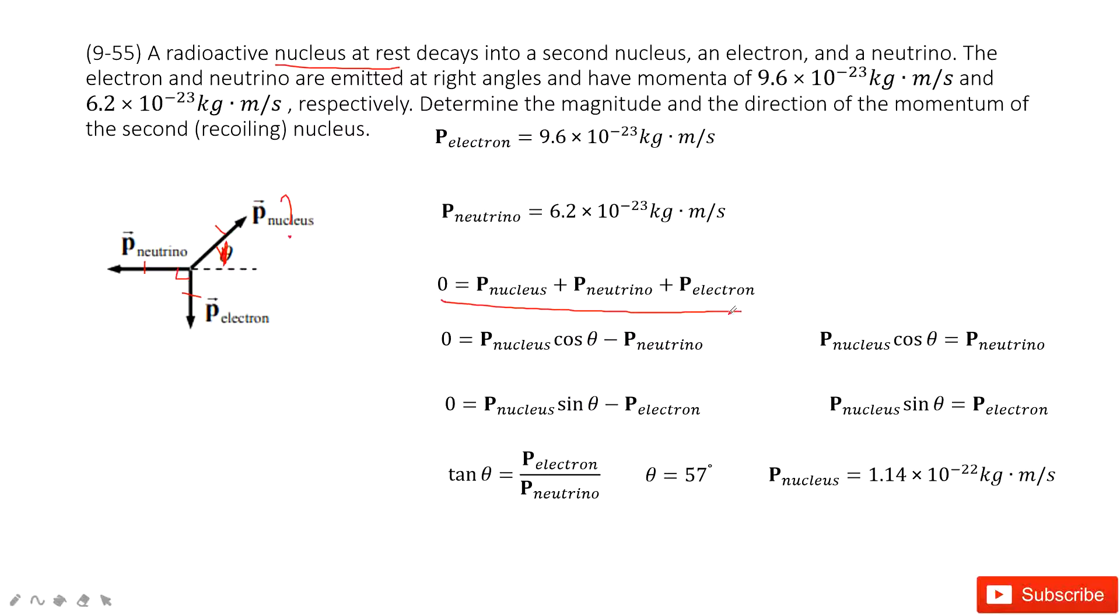Now we can consider linear momentum is conserved in the x-component and conserved in the y-component. So in the x-component, initially it's zero. And finally, we can use the momentum of the nucleus, cosine theta, projected in the x-component. So cosine theta minus the momentum for the neutrino.